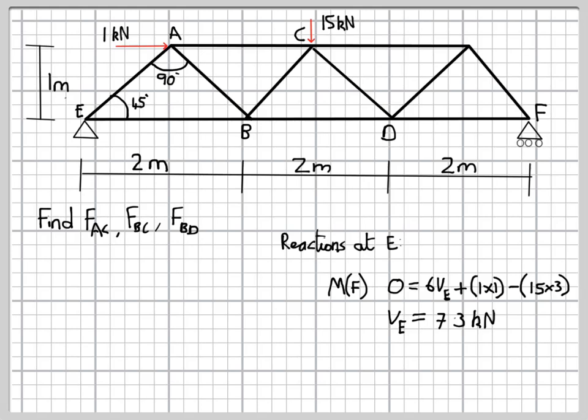And then in the opposite direction, the force at C acting through 3 metres. If we work that through, then we get the vertical reaction force at E of 7.3 kN, so that's acting upwards.